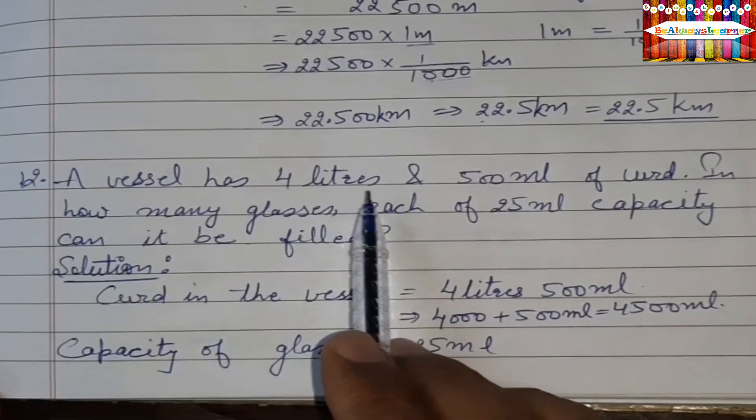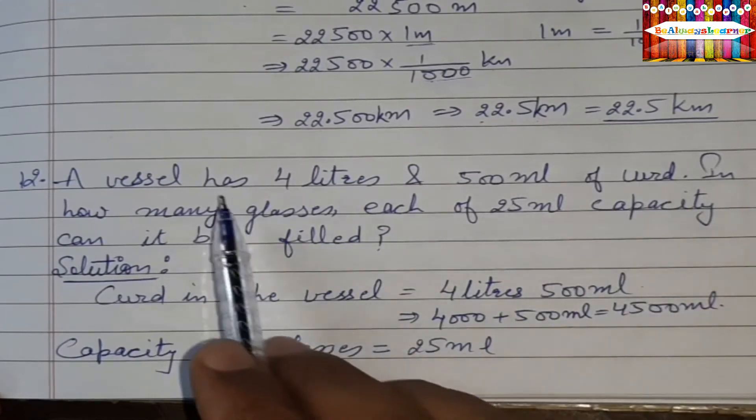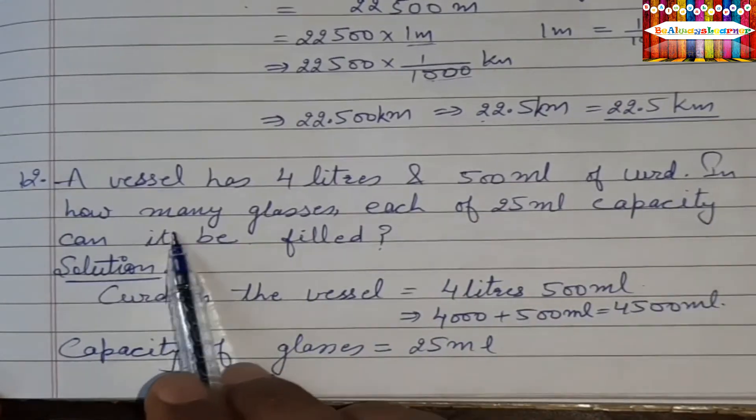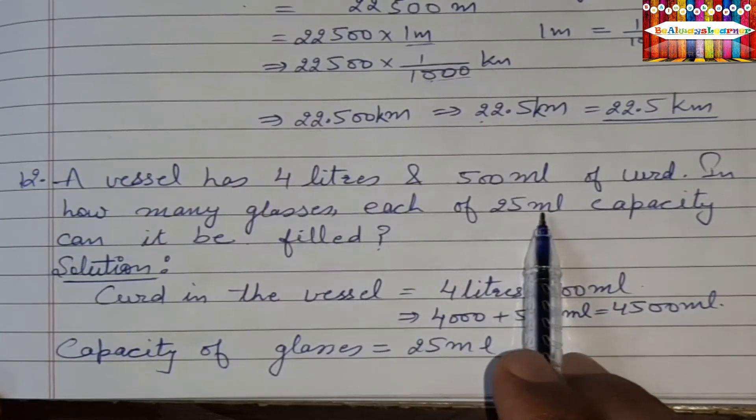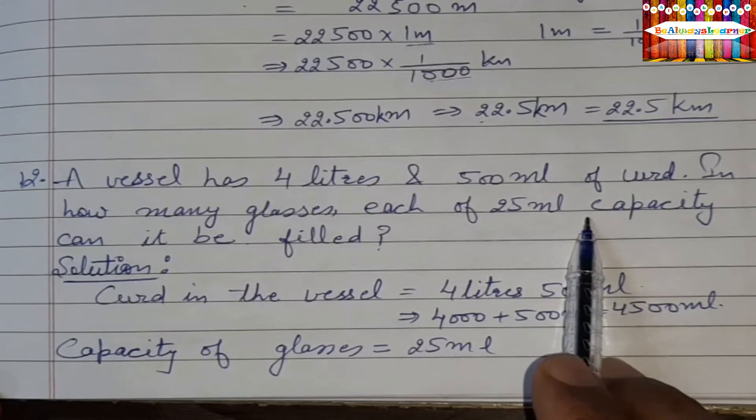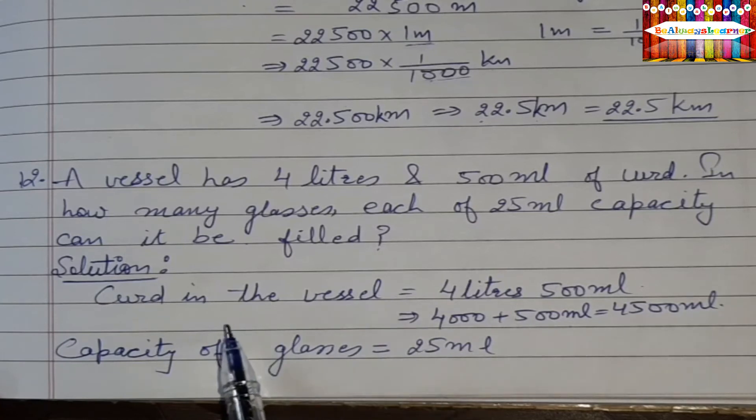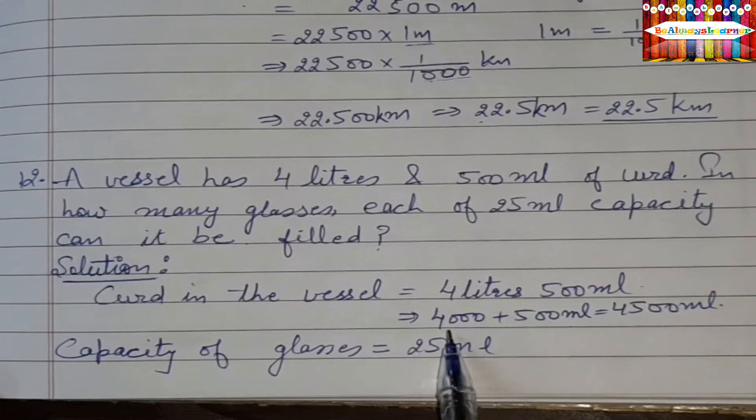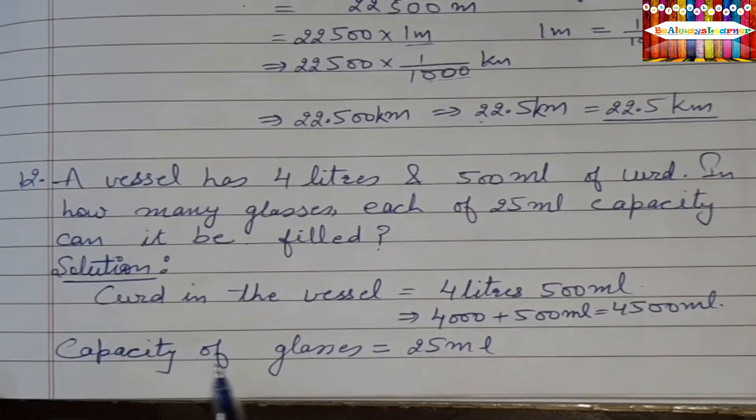12th question, last question. A vessel has 4 liters and 500 ml of curd. In how many glasses each of 25 ml can be filled? So one glass is 25 ml capacity. How many glasses will be filled? So we need to find, we go to small units. Curd in vessel is 4 liter 500 ml. So 4 liter has how many ml? 1000, so 4000 plus 500 will become 4500 ml. Capacity of the glass is 25 ml.